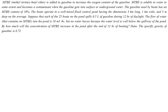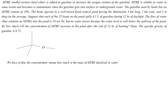First we need to identify what we are required to find. We are asked to calculate the concentration of MTBE that increases after boating for 12 hours. This is the structure of MTBE, methyl tertiary butyl ether. We need to find the concentration, meaning how much mass of MTBE is dissolved in the water. We will first find the mass of the MTBE and then the mass of the water. Concentration is the ratio of solute to solvent — here MTBE is the solute and water is the solvent.